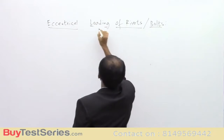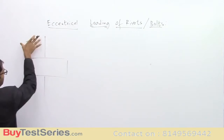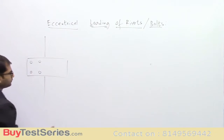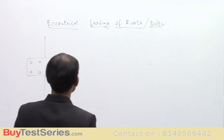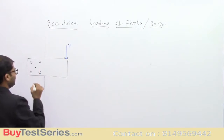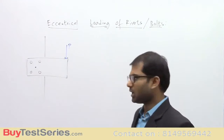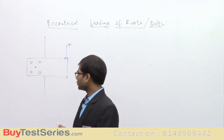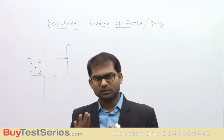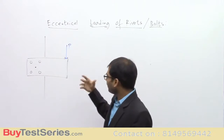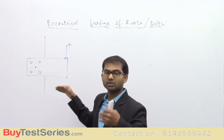Today I would like to explain eccentric loading of rivets or bolts. I'll draw the diagram first to understand what exactly eccentric loading is. Here we have one member and another member, both attached with some rivets or bolts. A force P is applied, and the centroid of the arrangement is located elsewhere. The line of action of force P is not passing through the centroid of the rivet or bolt arrangement — it is passing eccentrically.